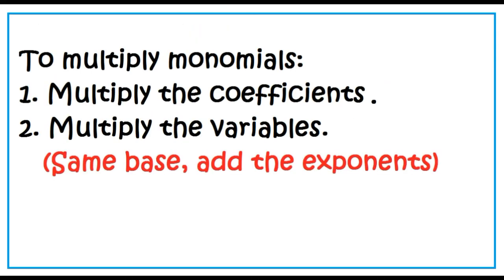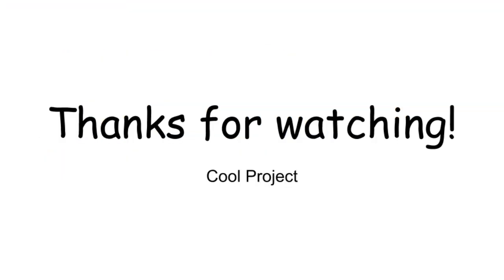To multiply monomials: multiply the coefficients, multiply the variables, and if they have the same base, add the exponents.